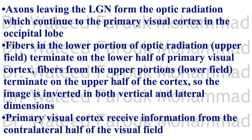In the occipital cortex, areas 17, 18, and 19: fibers from the lower portion of the optic radiation (upper visual field) terminate in the lower half of the primary visual cortex, while fibers from the upper portion (lower visual field) terminate on the upper half of the cortex. So the image formed is inverted in both vertical and lateral dimensions.